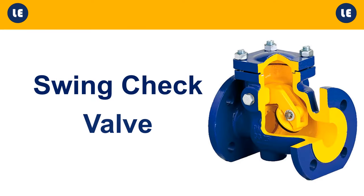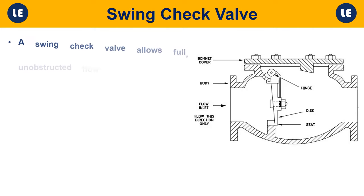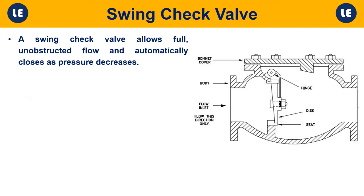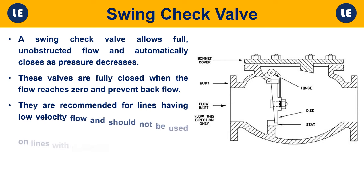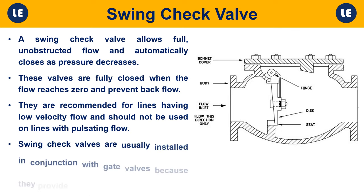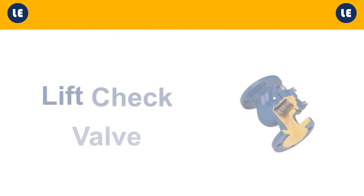Swing check valve: A swing check valve allows full, unobstructed flow and automatically closes as pressure decreases. These valves are fully closed when the flow reaches zero and prevent back flow. They are recommended for lines having low velocity flow and should not be used on lines with pulsating flow. Swing check valves are usually installed in conjunction with gate valves because they provide relatively free flow.